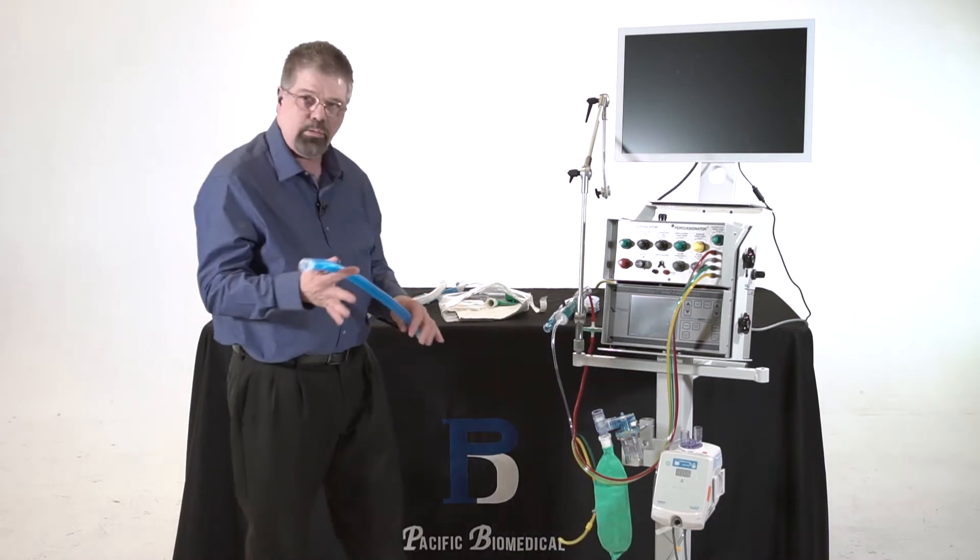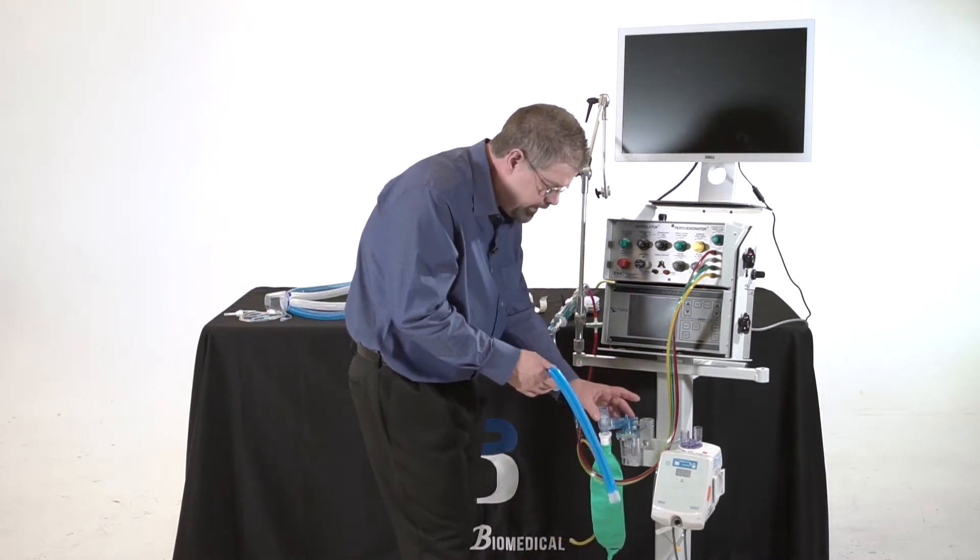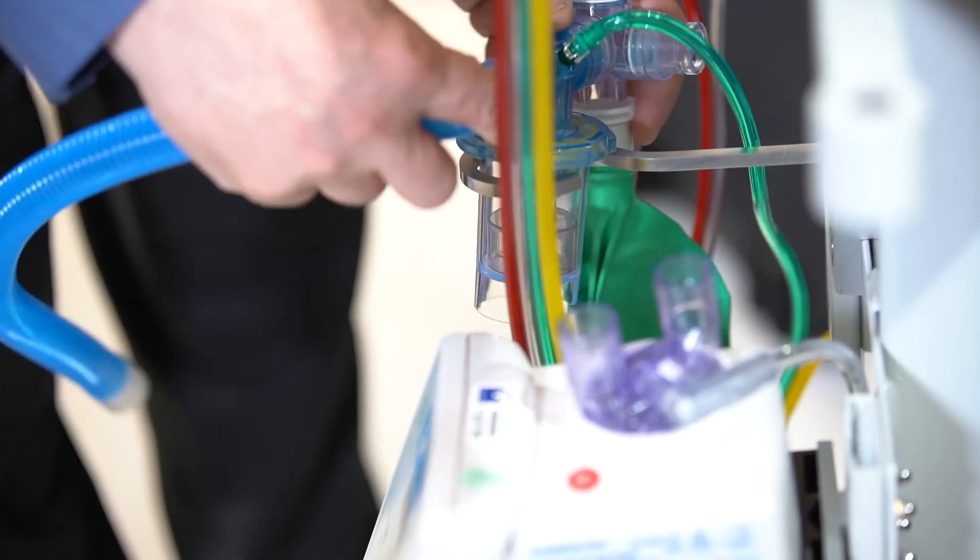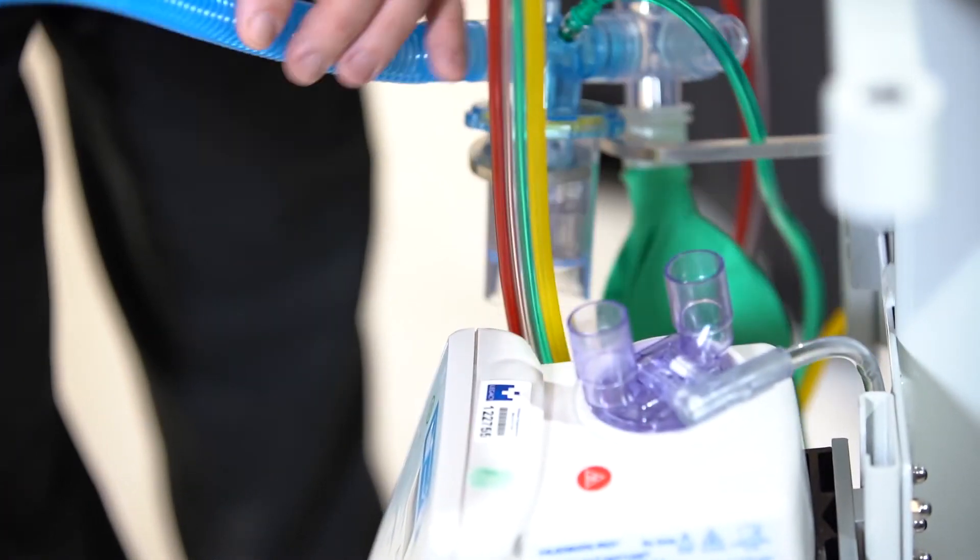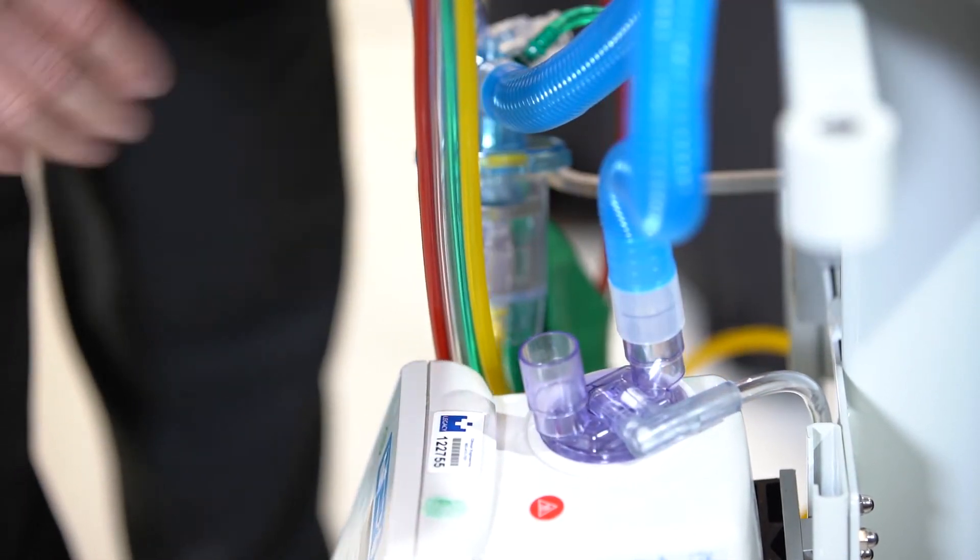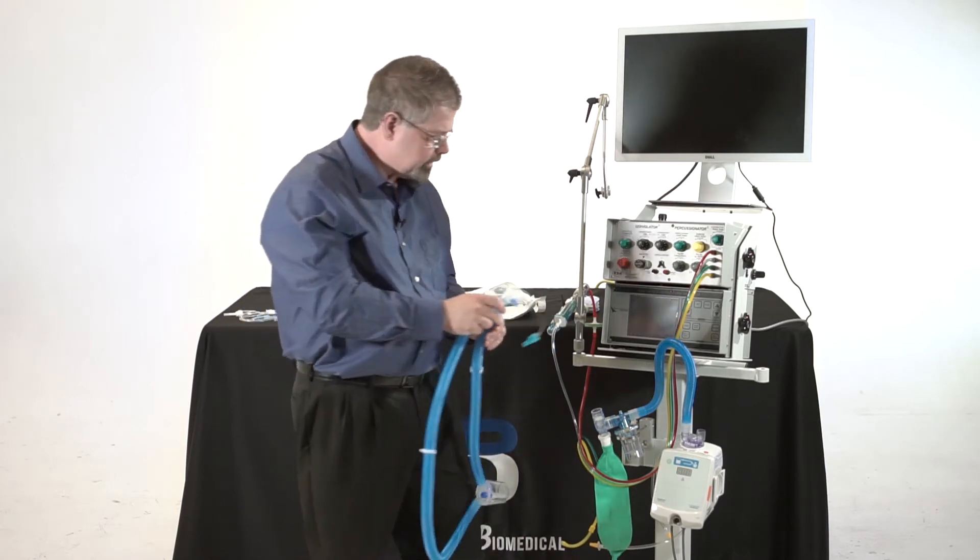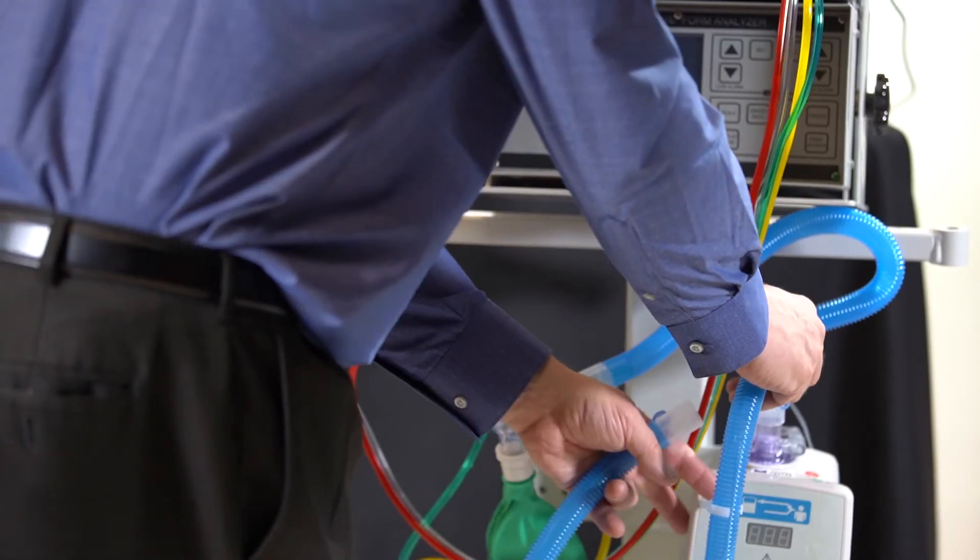We're all familiar with ventilator circuits. So I'm going to take this nebulizer, if you will, the blue piece of that, and I'm going to hook this up to this side of the humidifier. So I'm going to take this inspiratory limb and I'm just going to simply hook it up to the other side of the humidifier.